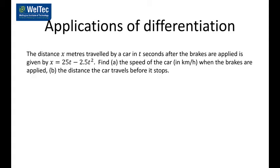This question is the same or very similar to the one done earlier. The trick is the answer is in kilometers per hour, whereas the question is given in terms of seconds — you just have to convert your final answer to kilometers per hour. Then find the distance when the car stops, remembering that when the car stops v equals zero. The initial speed is 90 kilometers per hour, and the distance it travels before stopping is 62.5 meters.